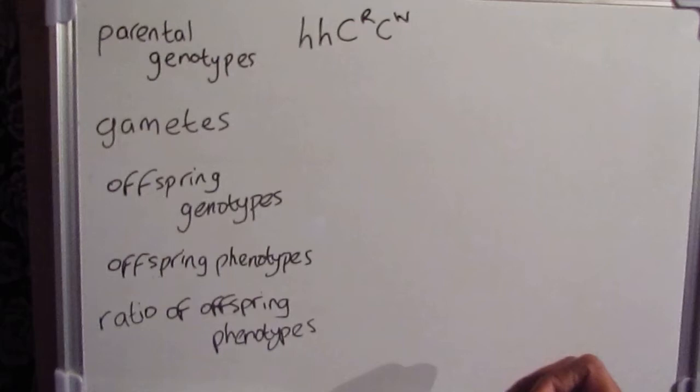For roan, the information does tell us that a roan cattle have a mixture of red and white hairs. So that must mean that the roan condition must be the co-dominant phenotype, meaning we should have C superscript R, C superscript W for our horned roan.